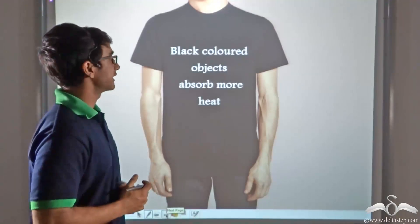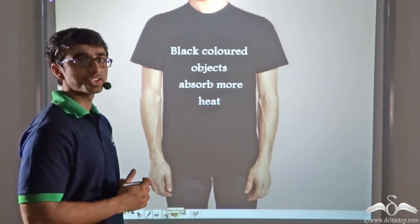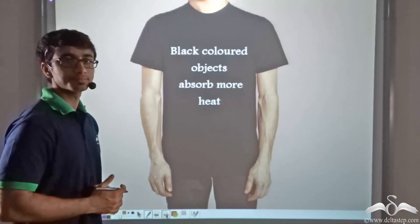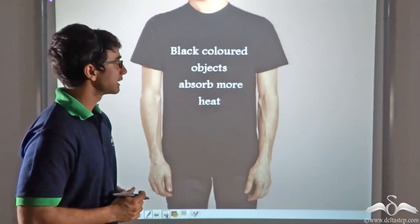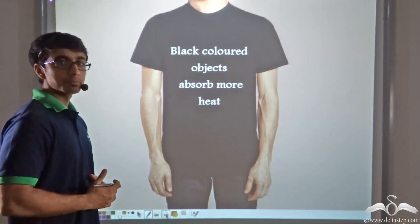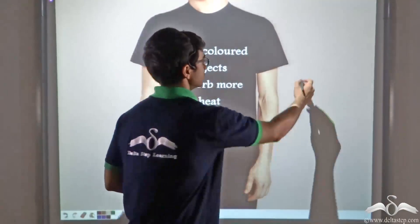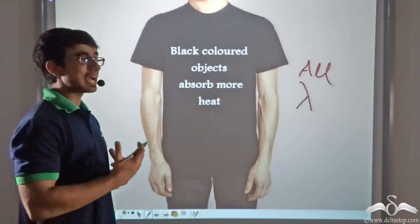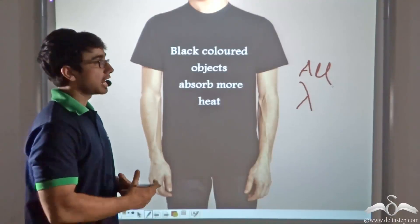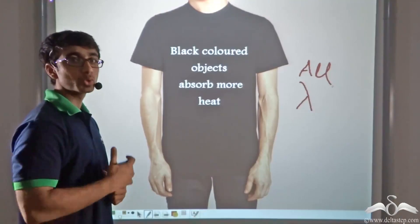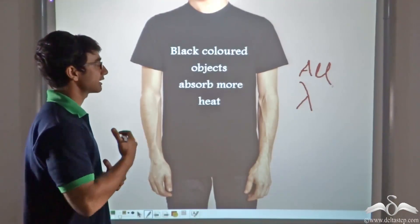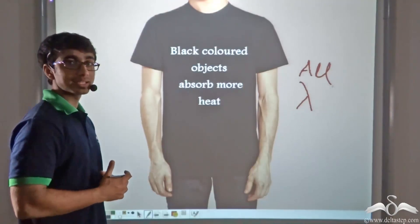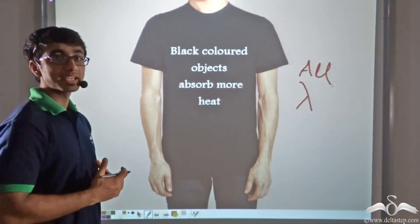Now let me tell you another interesting fact. Why do you think your mom always tells you not to wear black coloured clothes during summer? The reason is that black coloured objects absorb more heat. We have studied that an object appears black because all wavelengths of light are absorbed. A part of this light energy is actually converted into heat energy, and this heat energy is absorbed by black objects, because black coloured objects are good absorbers of heat. As a result, your mother forbids you from wearing black coloured clothes in summer because it will make you feel more uncomfortable.